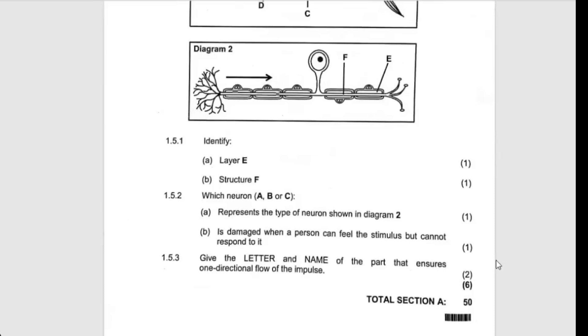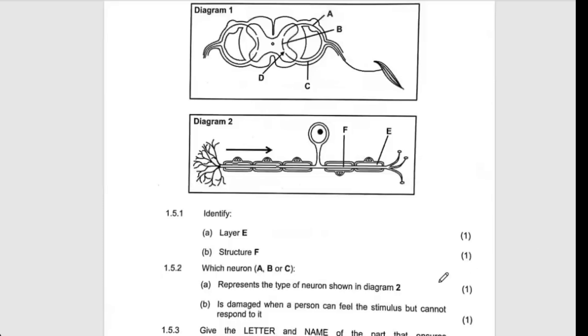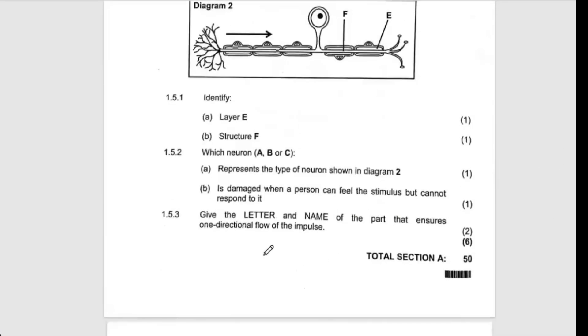For example, when you are going to remove a tooth, the doctor injects you and then you don't feel pain, but if the doctor asks you to open the mouth you are able to open the mouth. It means that you don't feel the pain but you can respond with those muscles. So the answer is going to be C, which is the motor neuron.